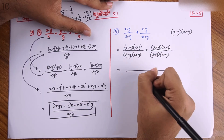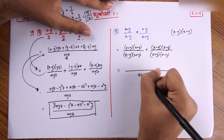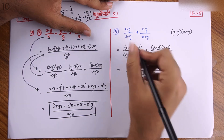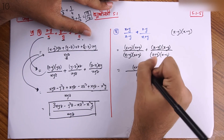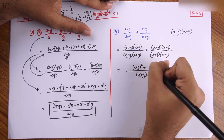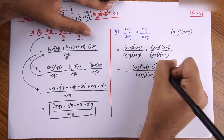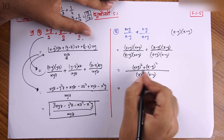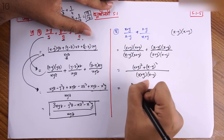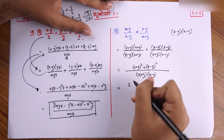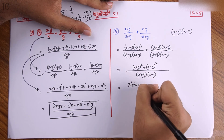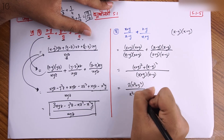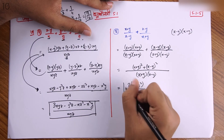We will write x-y whole square and x-y whole square. It is equal to 2x square plus y square, and the same thing is x-y square.